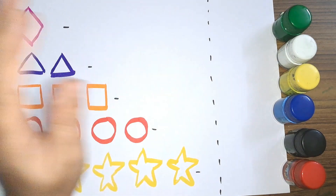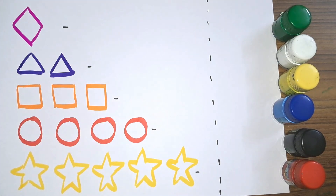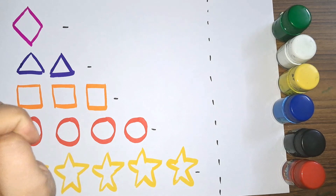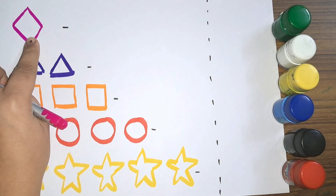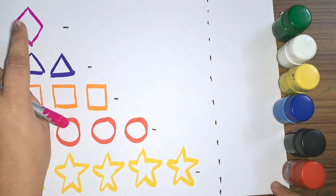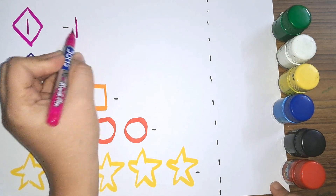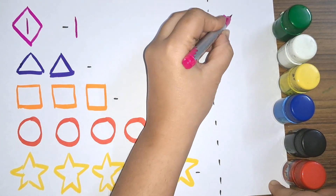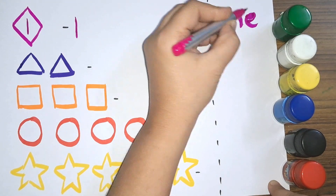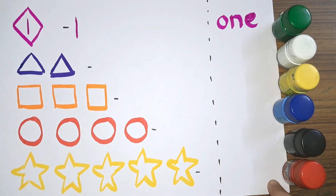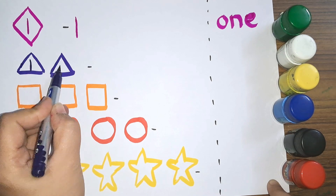Hey kids, how are you today? Let us learn some shapes, colors, and numbers. We will also write the number names. Now let's get started. First we have the shape diamond. How many diamonds do we have? One diamond. One — O, N, E — one. One diamond. We have triangle. How many triangles do we have? One, two.